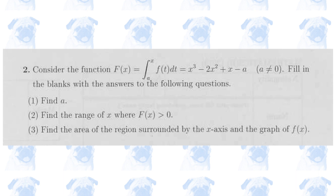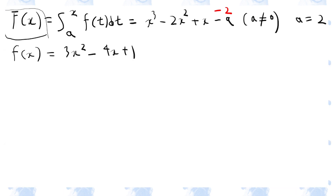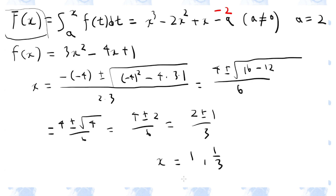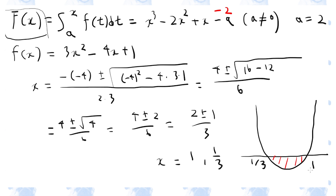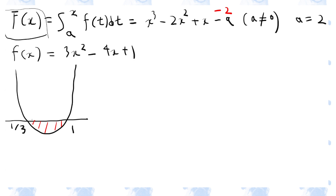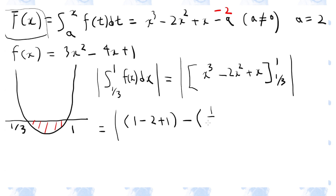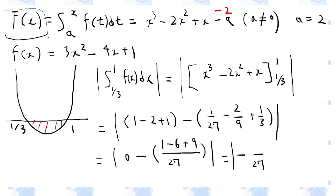Section 2, number 3. In this question, we need to find the area bounded by the x-axis and the graph of f of x. We need to be able to visualize this graph, so let's first try and find the roots of this function using the quadratic formula. So x is 1 or 1 over 3. The graph shows the area shaded in red. However, we need to be careful because this area lies below the x-axis, so we need to use the absolute value sign. So the answer is 4 over 27.